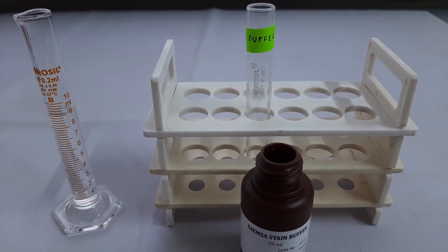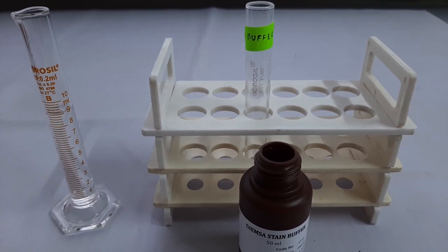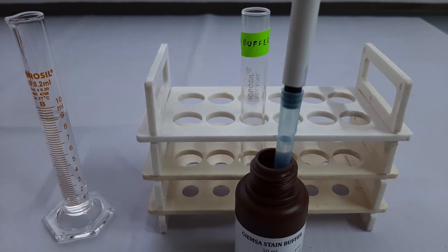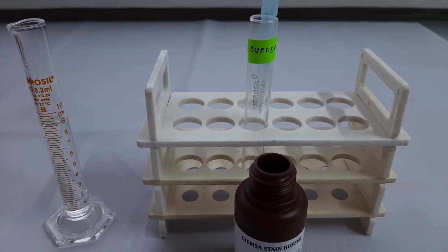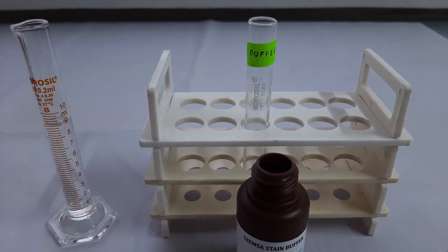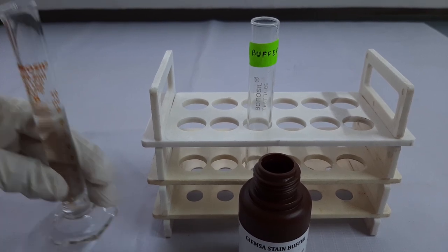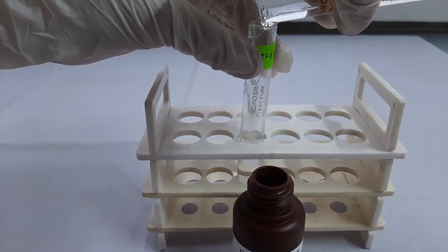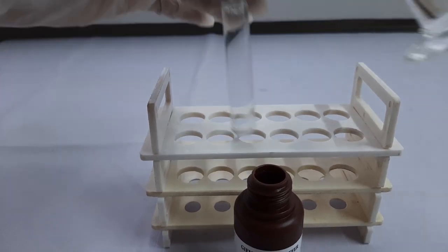As per the procedure, first, we will take 1 ml of the buffer from the kit and add it to a tube which we have previously labeled for the buffer. In that tube, we will add 9 ml of distilled water and then mix it thoroughly.